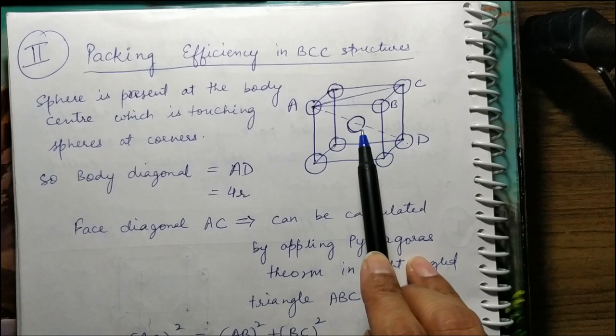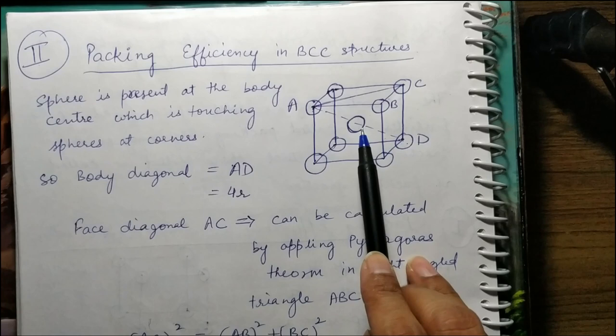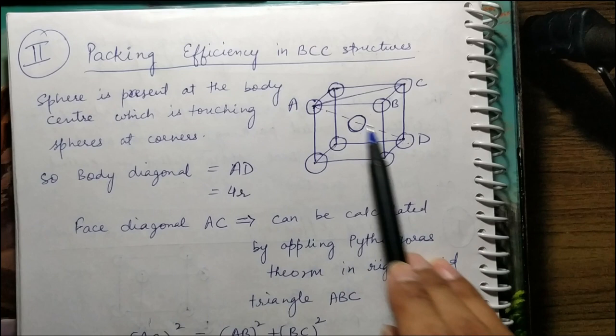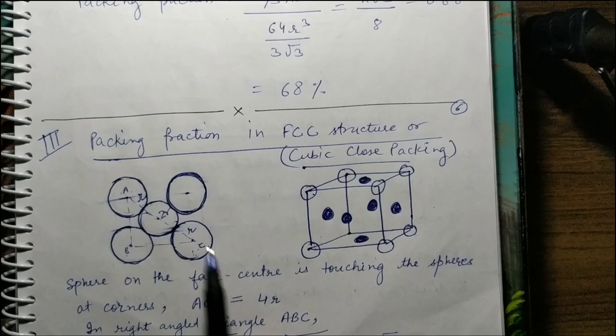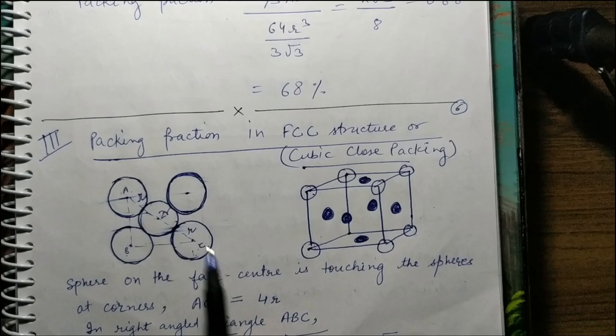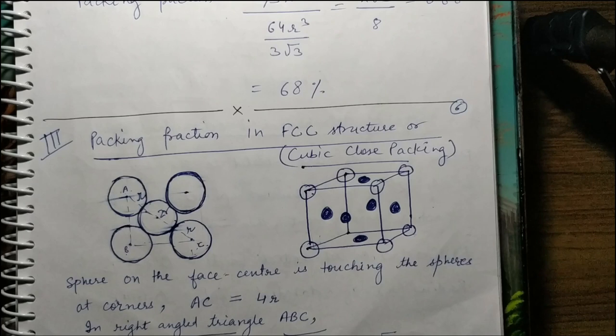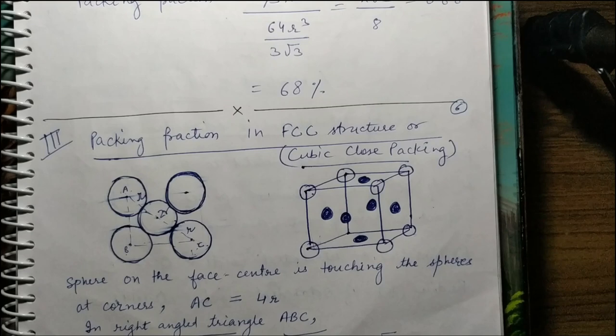This is the FCC and BCC structure. You will see eight corner atoms. There is a center atom. Here we have two types of diagonals — one is the face diagonal and one is the body diagonal. This is the packing fraction calculation — the packing efficiency comes out to 68% for BCC. After that, we have done FCC lattice. Let's see the figure of the FCC lattice. I have drawn the front face with corner atoms and face center atoms touching each other. Here we have applied the Pythagorean theorem; AC is the face diagonal.